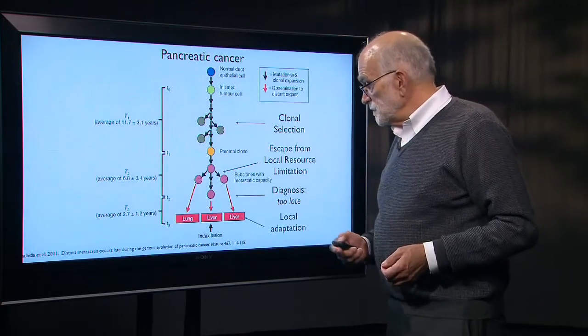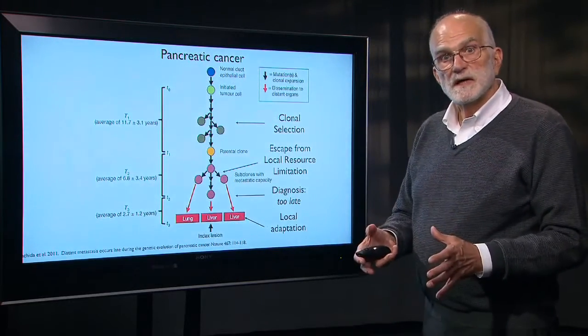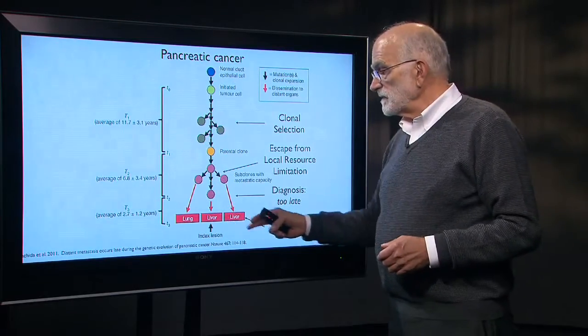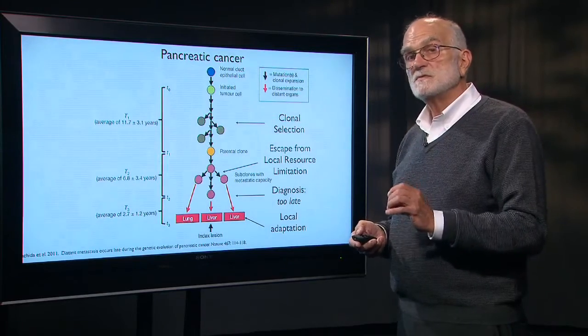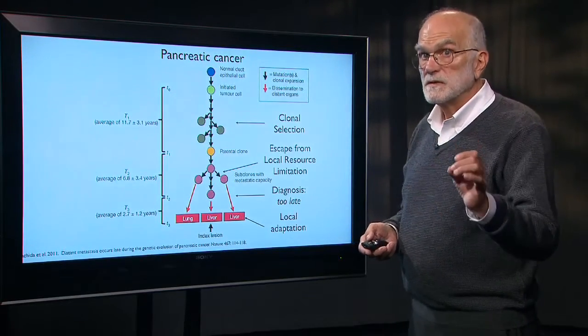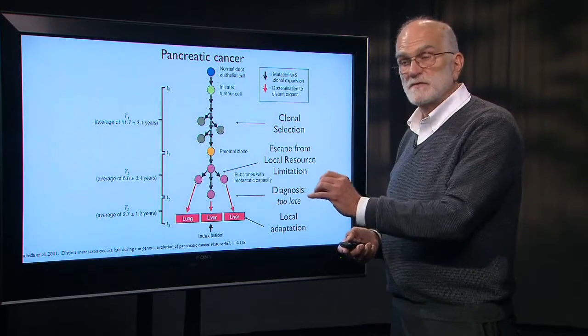The diagnosis comes too late and when the patient finally dies and we look at the metastasis in lung and liver, we discover local adaptation. They've changed. The metastasis moving into lung cells have become more like lung cells and the metastasis moving into liver have become more like liver cells.